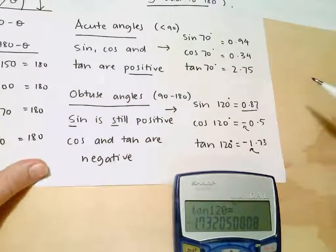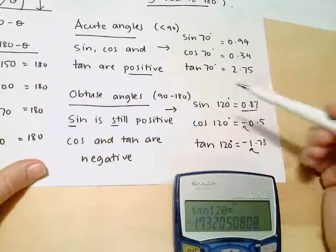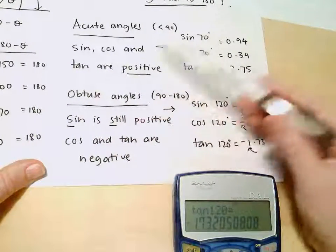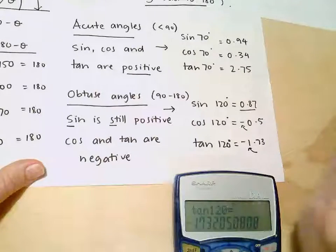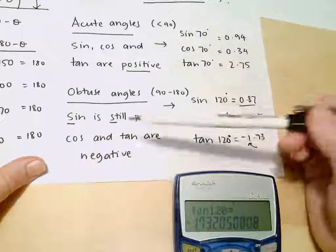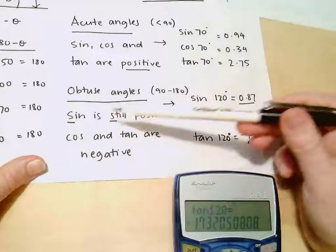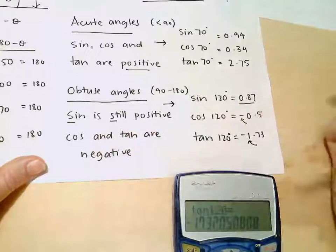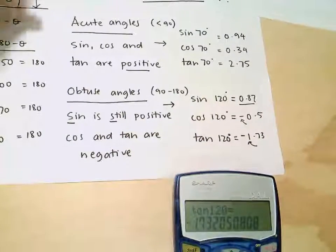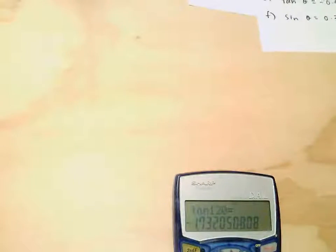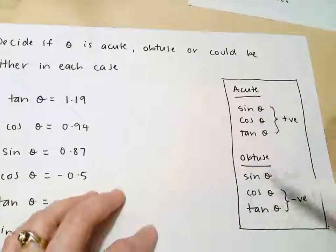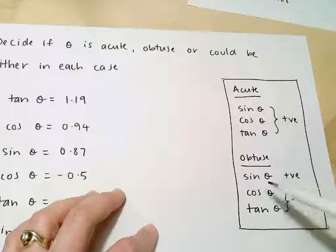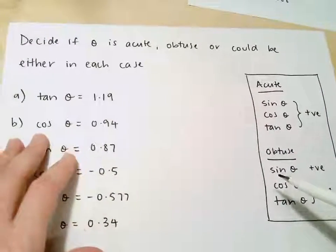So the rules are: for acute angles, sine, cos and tan are all positive — nothing to remember. But for obtuse angles, it's only sine that stays positive; cos and tan are negative. Let's have a look at what this is going to mean for us in terms of questions. I've put the little rule to the side so I can refer to it as we do these questions.